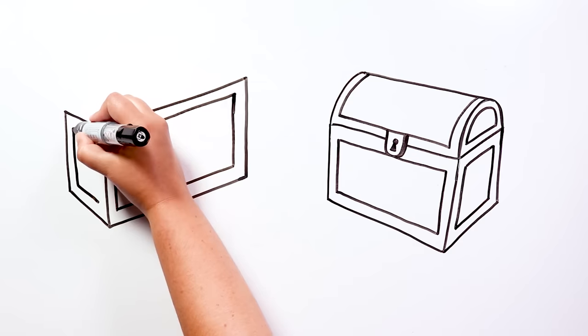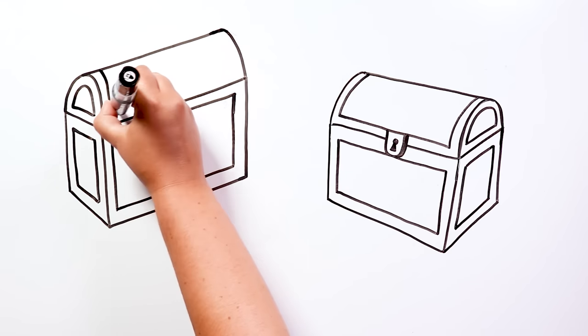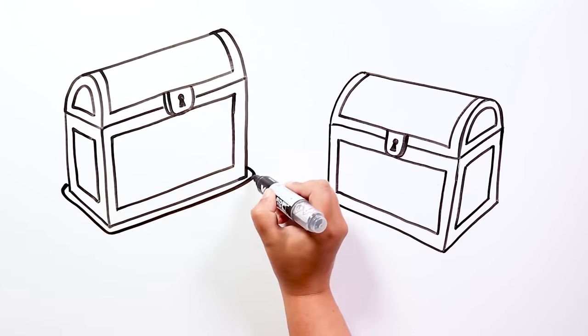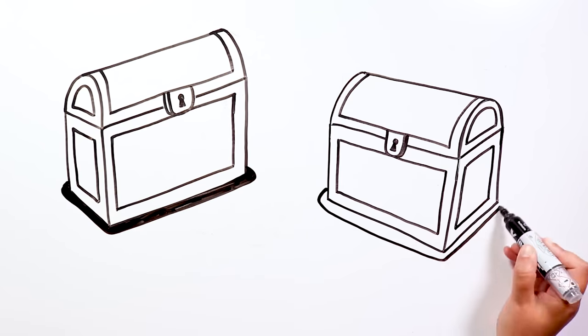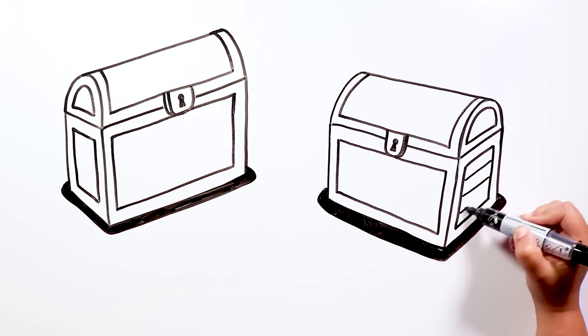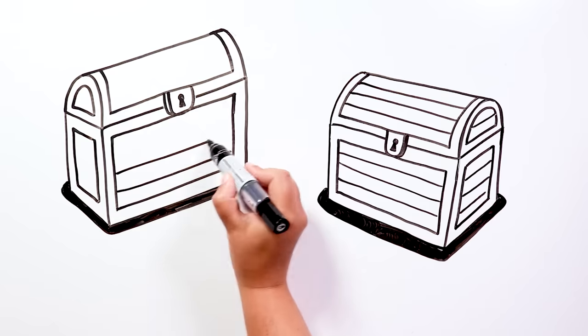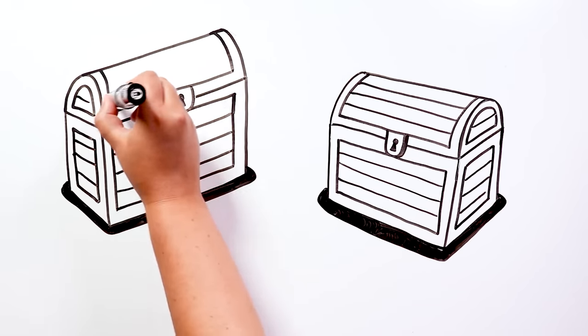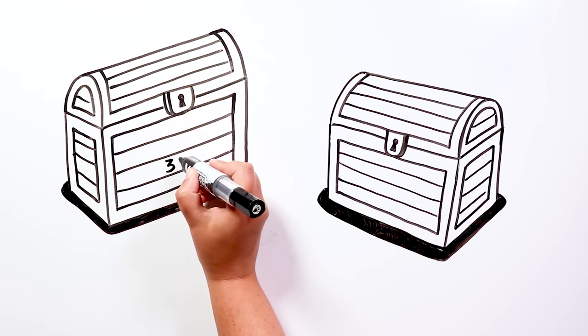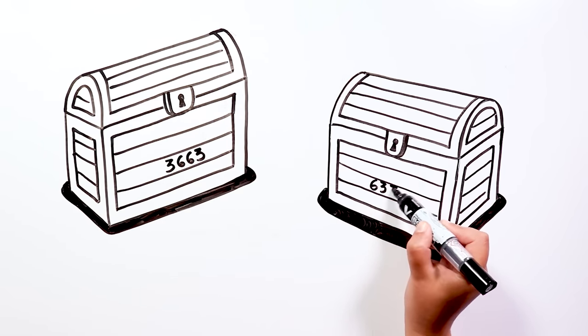Then two chests appeared in front of them. One had written on it the number 3663, the other one said 6336. Sarah started feeling doubt. She was no longer sure if she remembered perfectly the combination of numbers. If she opened the wrong chest, all of their efforts would have been in vain, and her soul would be exchanged for Christopher's.